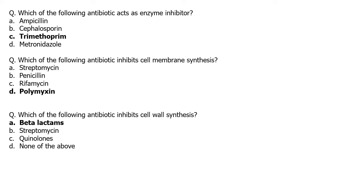Which antibiotic acts as an enzyme inhibitor — ampicillin, cephalosporin, trimethoprim, or metronidazole? Ampicillin and cephalosporin are beta-lactams working against cell wall biosynthesis; metronidazole works against DNA damage. The remaining option is trimethoprim, which acts as an enzyme inhibitor. Next: which inhibits cell membrane synthesis — streptomycin, penicillin, rifampicin, or polymyxin? The answer is polymyxin. Which inhibits cell wall synthesis? The answer is beta-lactams.